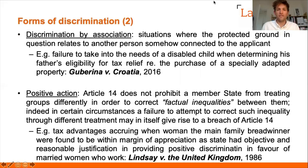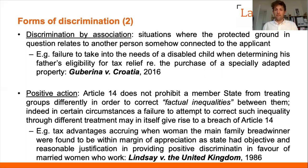Discrimination by association is where the protected ground relates to another person somehow connected with you. For example, the failure to take into account the needs of a person's disabled child when determining that person's eligibility for tax relief was a form of discrimination by association — the person affected was not themselves discriminated against, but was discriminated against by association with a disabled person.